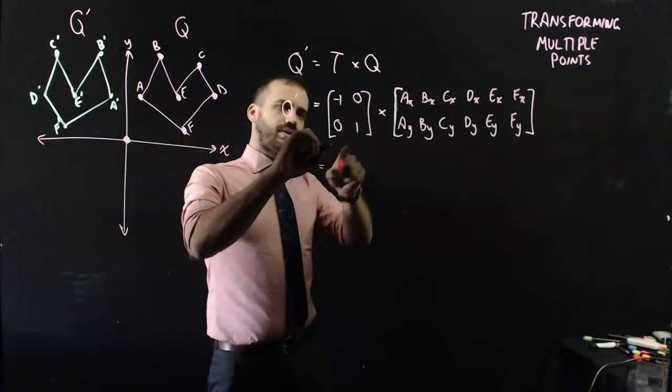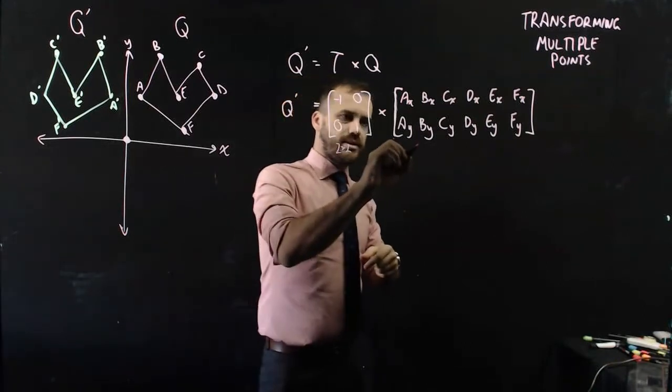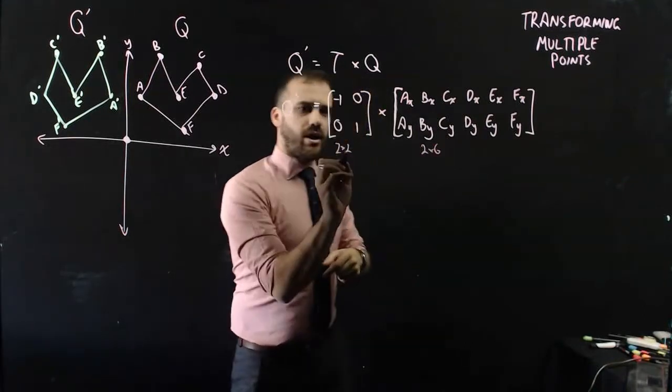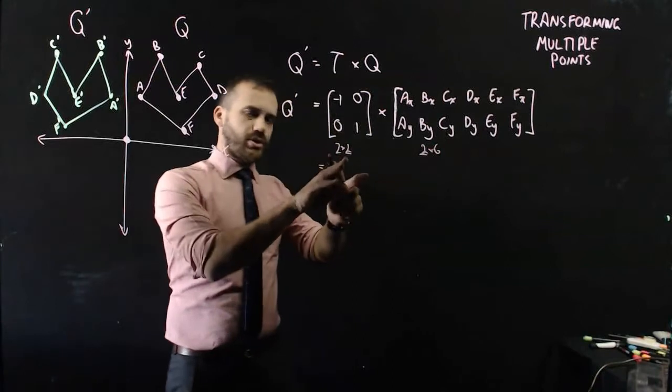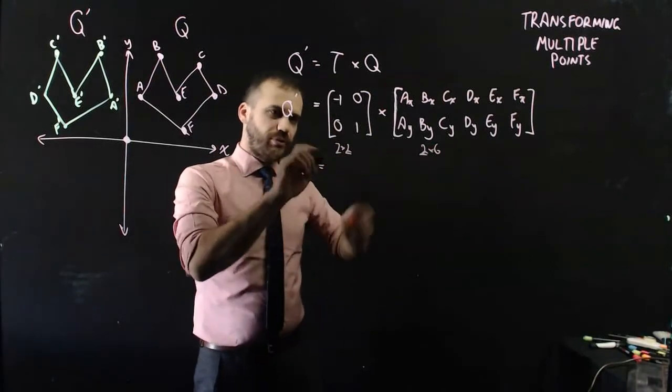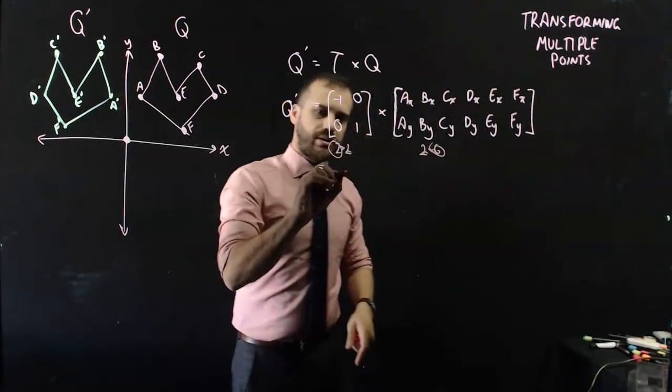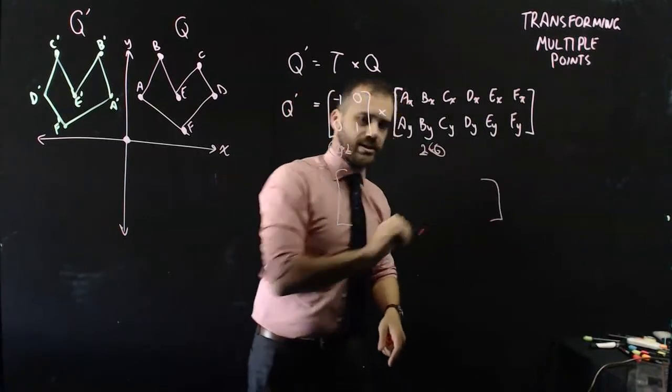Now, from there, what have we got? This is a 2 by 2 matrix. This is a 2 by 6 matrix. I can multiply them together because the columns of this equal the rows of this. The result is going to be a 2 by 6 matrix.